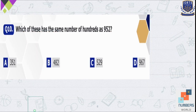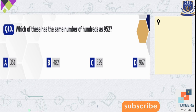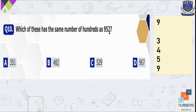Question number 10 — which of these has the same number of hundreds as 952? In 952, the digit 9 is at the hundreds place. Checking all options: option A has 3 at hundreds, option B has 4, option C has 5, and option D has 9 at the hundreds place. So option D is correct because 952 and 967 both have 9 at their hundreds places.